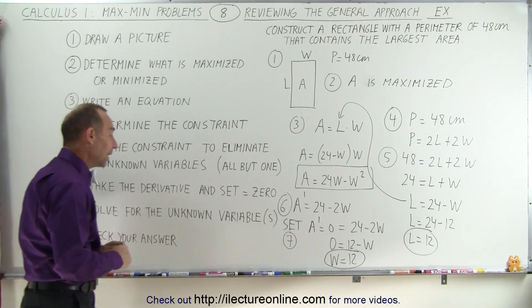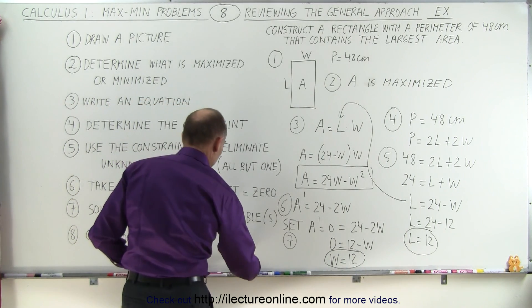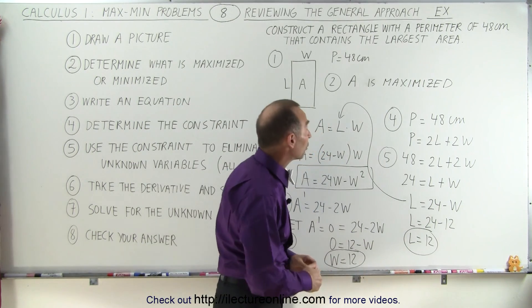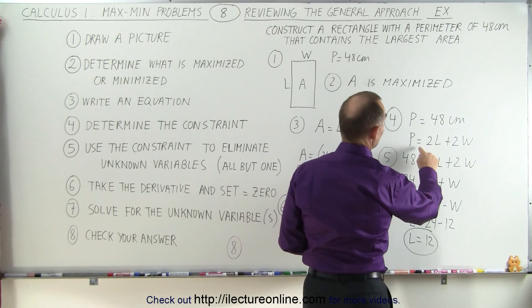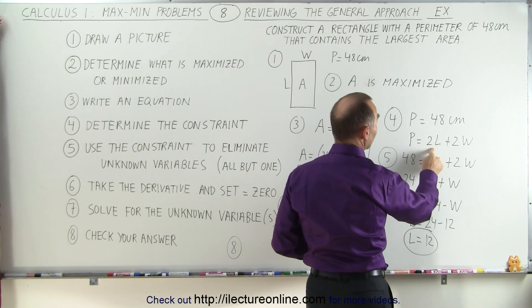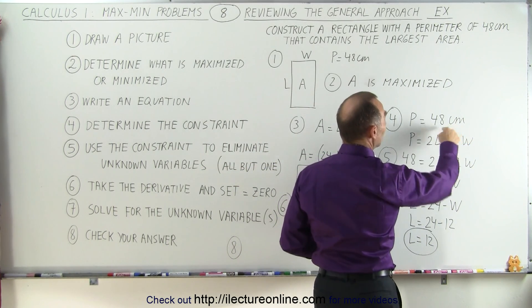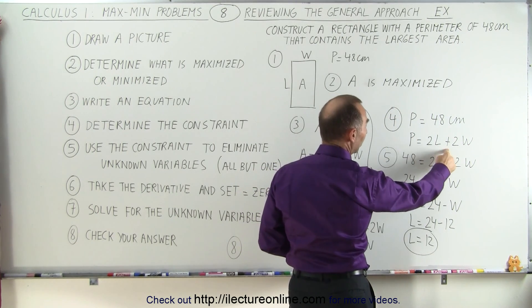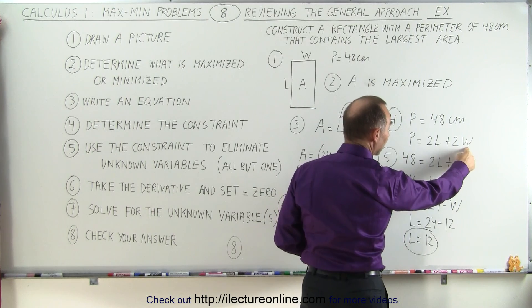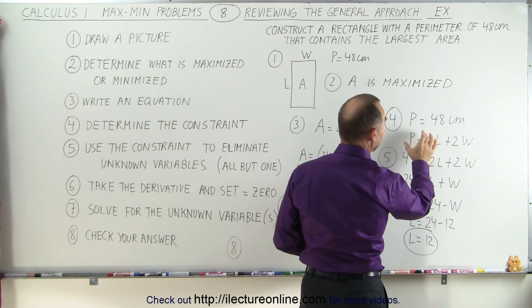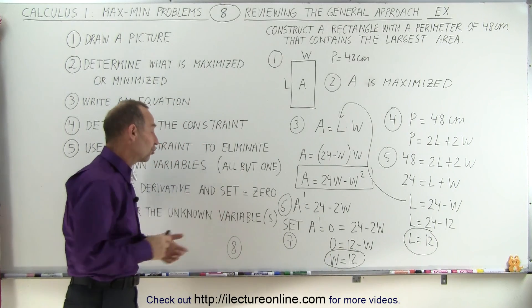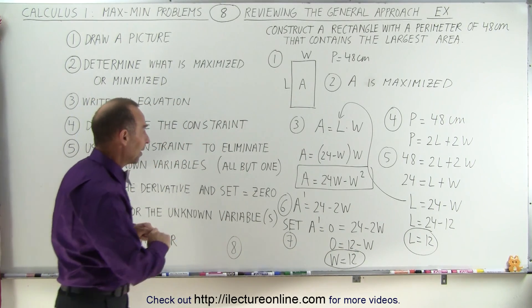Finally, number eight, we can check our answer. What we're going to do is we're going to plug our answers W and L back in the original constraint. Here we know that the perimeter must be twice the length plus twice the width and add up to 48 centimeters. So twice 12 is 24 plus 2 times 12 is 24 again. 24 plus 24 indeed equals 48. And so we verified that yes, the answers do make sense. And so that would be step number eight.